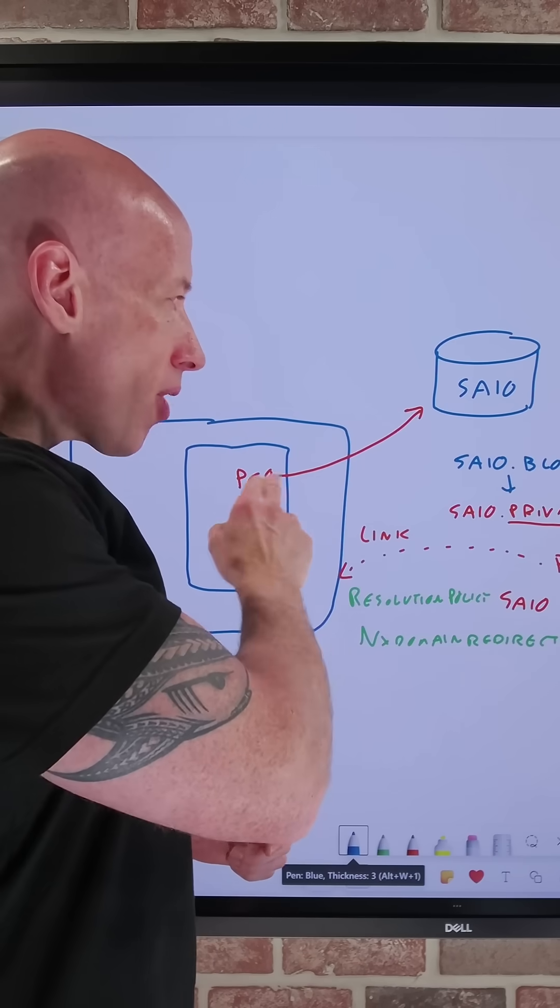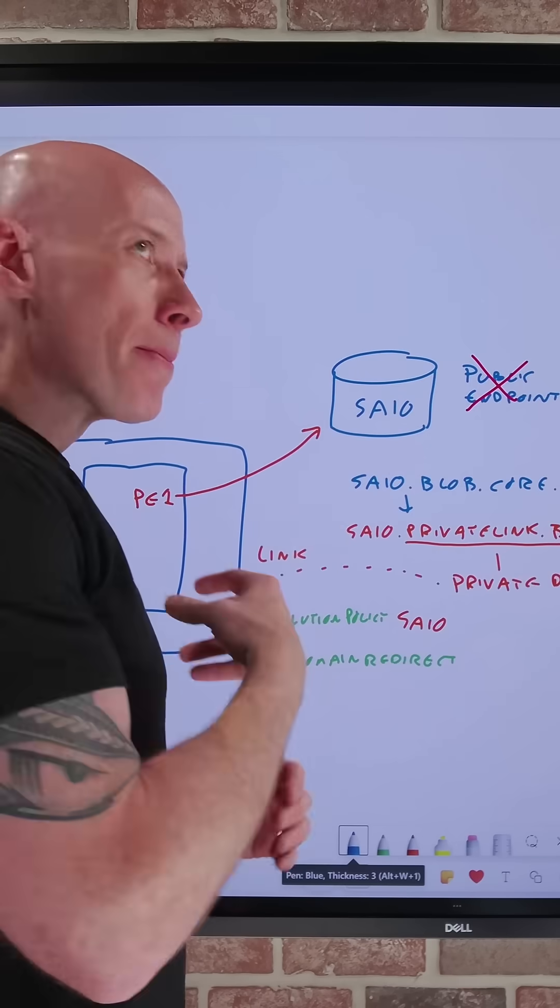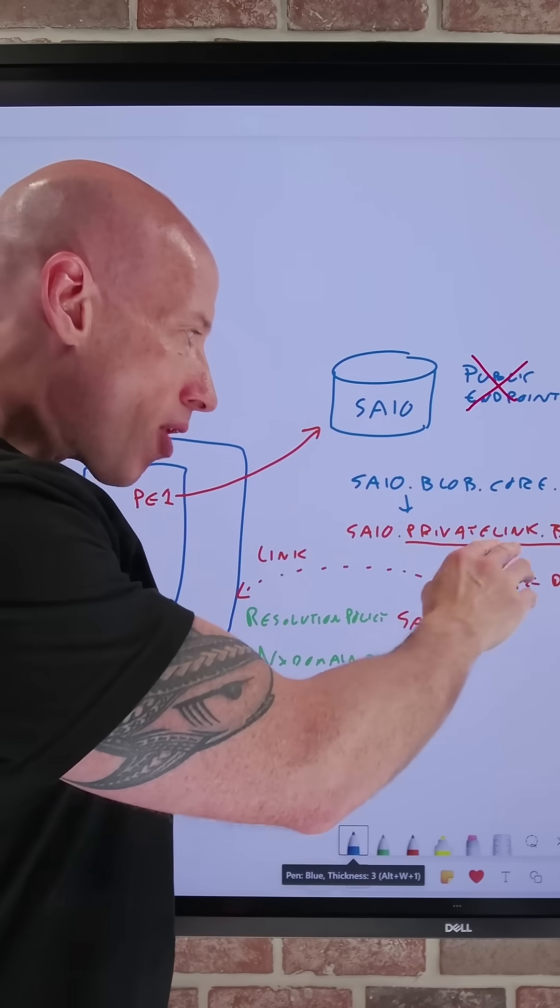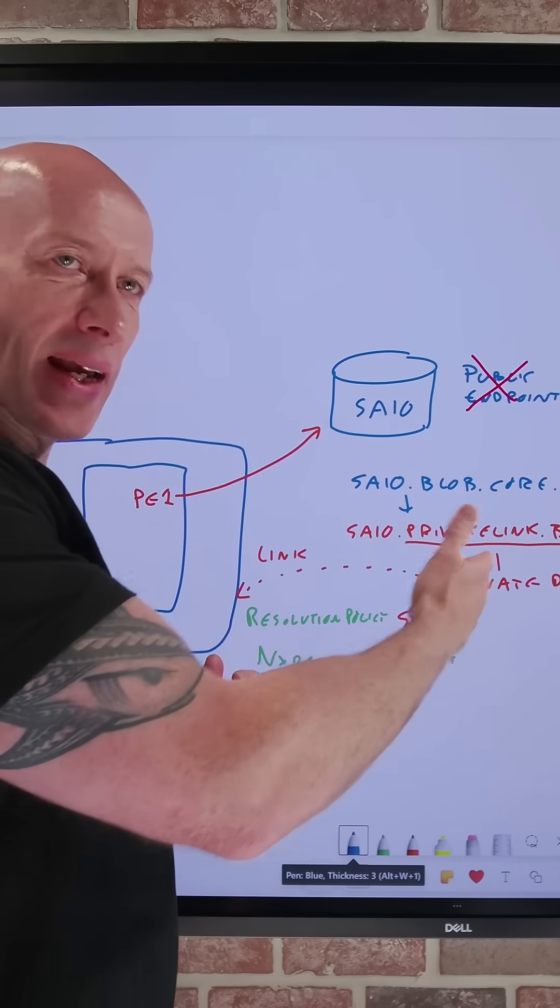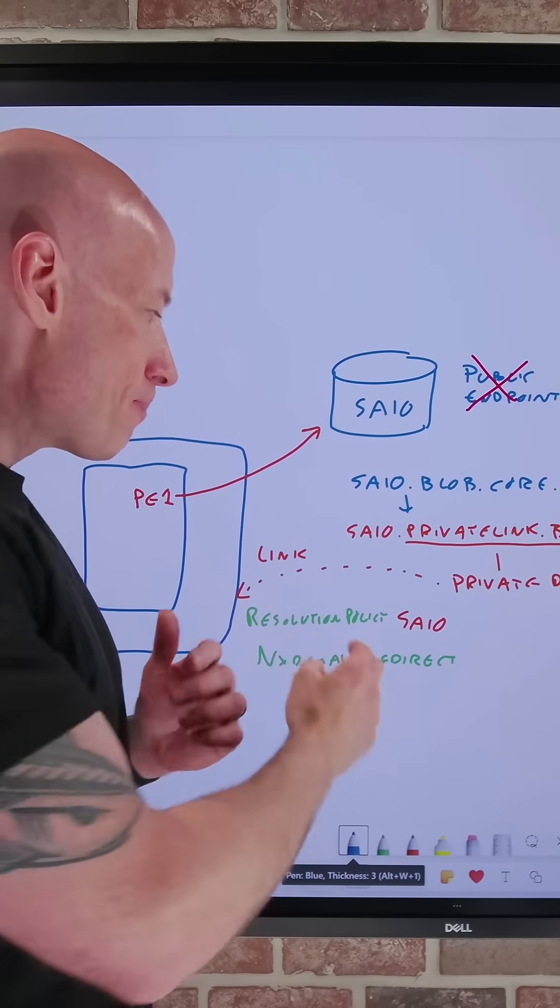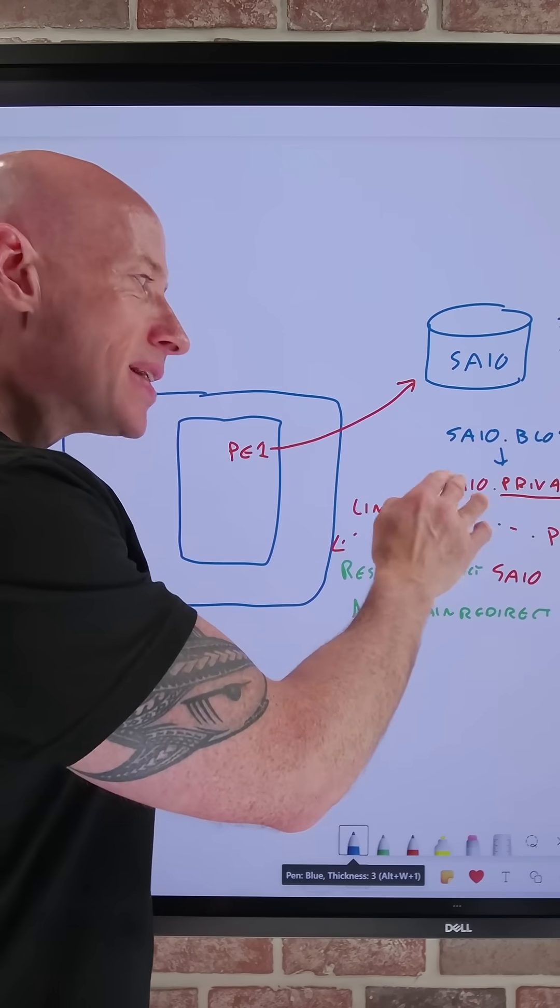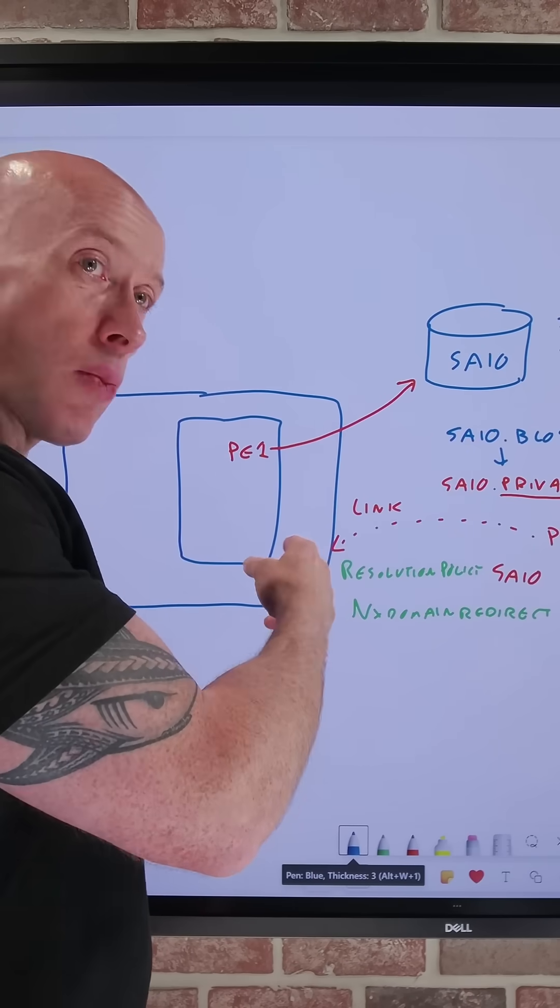So when I have a private endpoint to a service, it creates a new DNS alias with private link in the name. For example, storageaccount.privatelink.blob.core.windows.net. And we then link that particular private DNS zone instance to our virtual network.